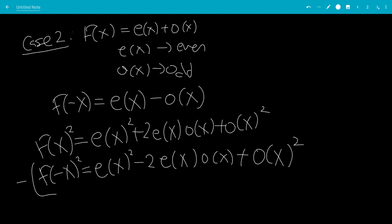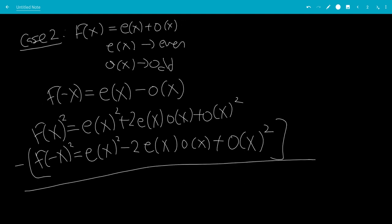So let's subtract the two. That's what we want. I'll just denote this as the left-hand side, LHS. So e(x)² will cancel, o(x)² will cancel. 2 something minus minus 2 something will be 4e(x)o(x).